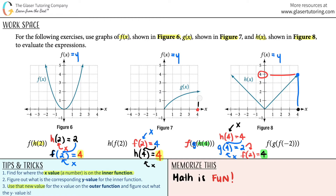So the more functions they give you, the more times you have to do the graph process. But always work from inner to middle to outer — always go from the inner to the outer.